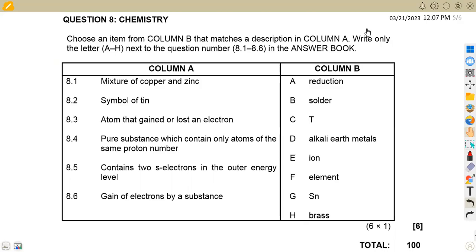From the question paper of November 2020, we have got a question on number eight, which is carrying six marks. Let's just quickly rush through these questions and see how we are supposed to attempt these typical questions. We are given, choose an item from column B that matches a description in column A. So our answers are taken from column B, but it has to match what we're given on column A. The letter A to H next to the question number 8.1 up to 8.6 in the answer book.